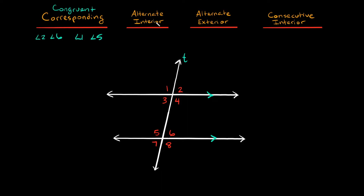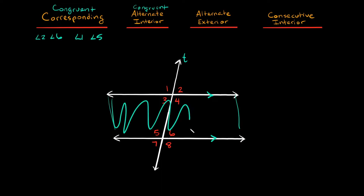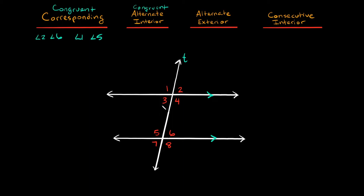Now let's talk about alternate interior angles. These angles are also congruent, meaning they have the same angle measure. When it's talking about interior angles, it's basically talking about the angles that are in between your two parallel lines. You can almost think of this like a sandwich — the parallel lines are the bread and all the interior angles are on the inside. So in that case, all the interior angles would be three, four, five, and six.